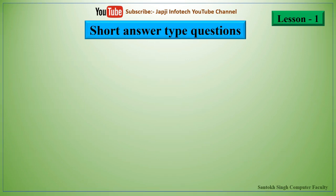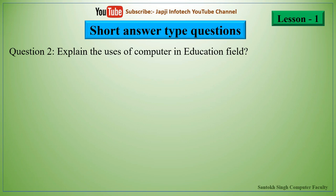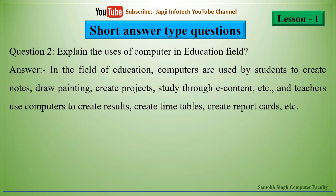We will now read about short answer type questions. The first question is: define computer. A computer is an electronic device designed to work with information. It receives data and instructions from the user in the form of input and follows these instructions. This process is called processing. The result generated after processing is given to the user as output. The second question is: explain the uses of computer in the education field. In the field of education, computers are used by students to create notes, draw paintings, create projects, and study through e-content.